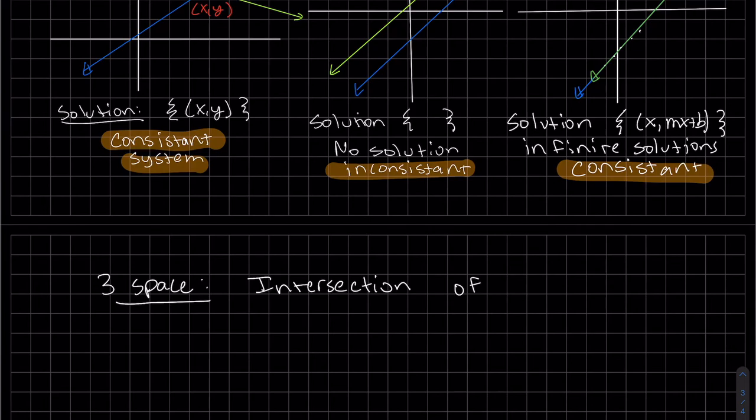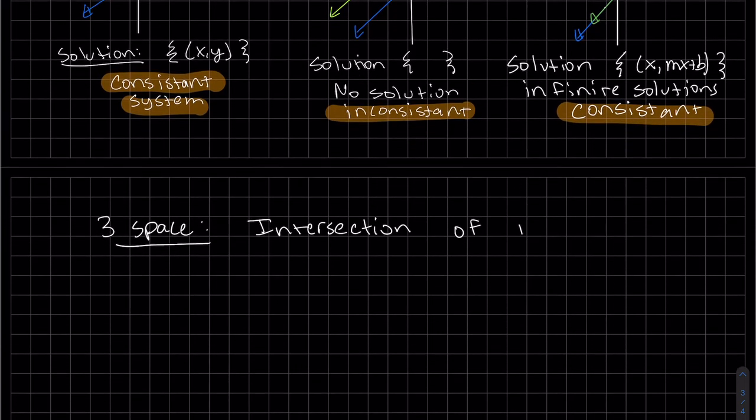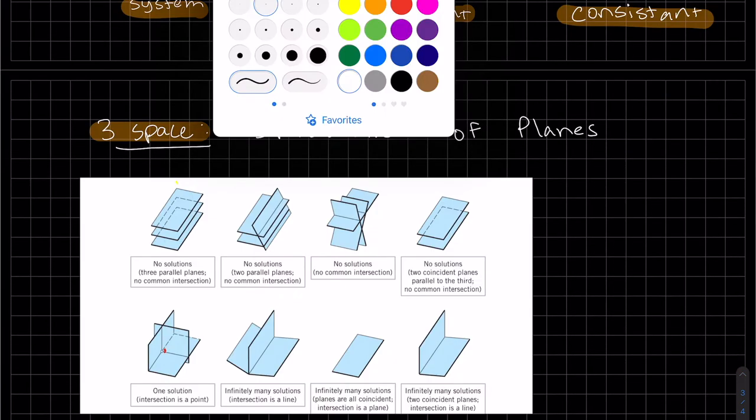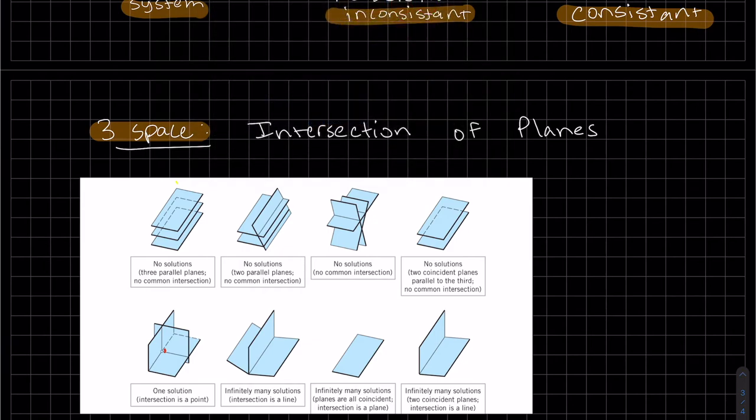So in three space, it's really the intersection of planes. So I'm not very good at drawing planes in 3D. This is much prettier. So these are all the no solutions. We have three planes that are parallel, so it's no solutions. Three parallel planes. We have two parallel planes and no common intersection. We can see one, two of them are parallel.